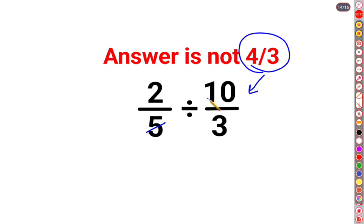Now the reason for that was they directly started cancelling. So if you cancel the 5's and the 2's, you would get the answer as 4 by 3. That is incorrect.